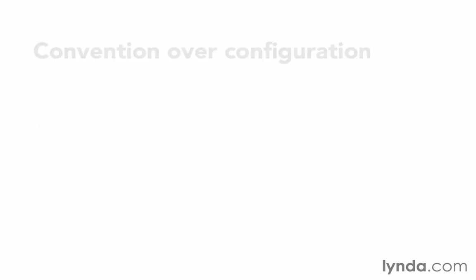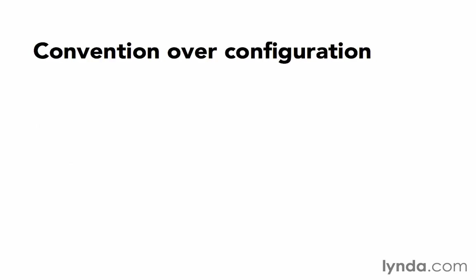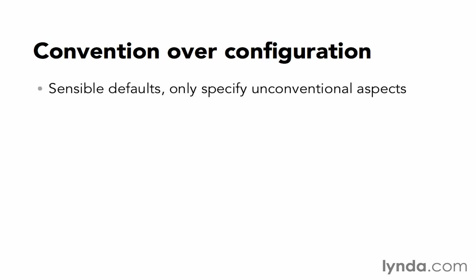The second guiding principle of Rails is convention over configuration. Rails is built using sensible default choices for everything. Those default options are what we'll use unless we override those defaults with our own choices.